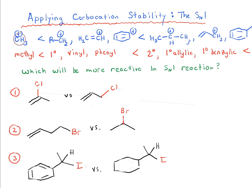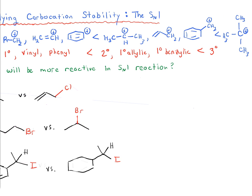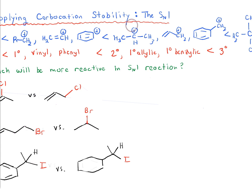On the far left, we've got a methyl carbocation — this is the least stable. Going up from methyl, we go to primary, which is about the same stability as a vinyl carbocation (this double bond here) and phenyl. Going up one level of stability, we come to secondary as well as primary allylic — which is primary but has resonance stabilization — and benzylic, which is also primary but has resonance stabilization. At the top of the list is tertiary, the most stable carbocation.